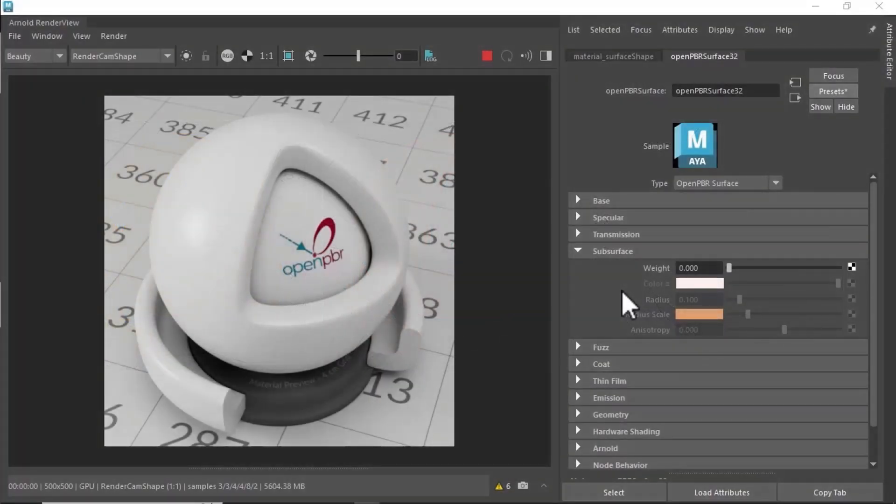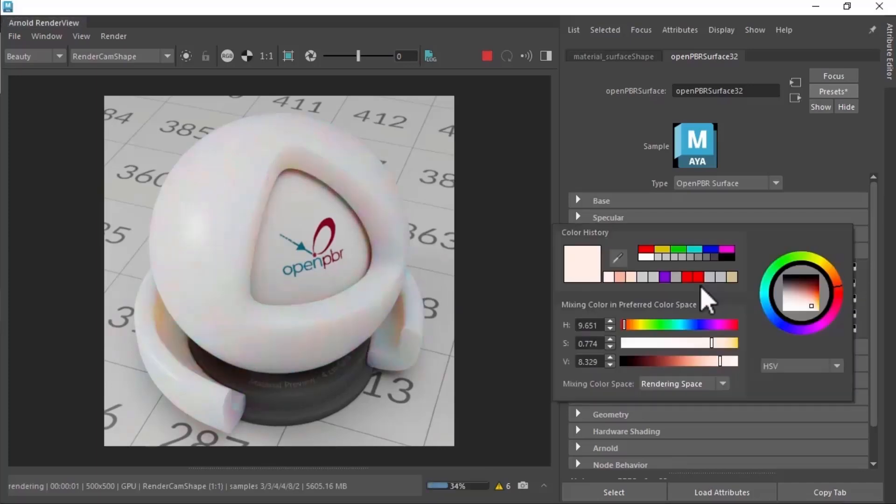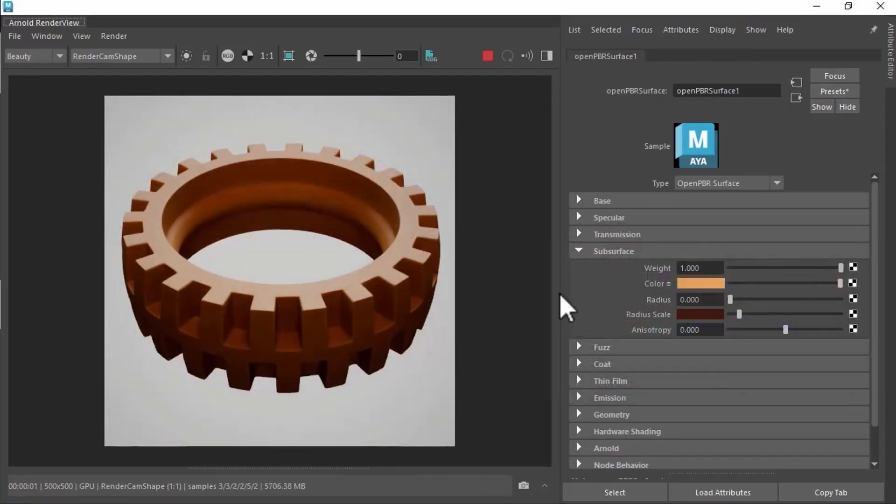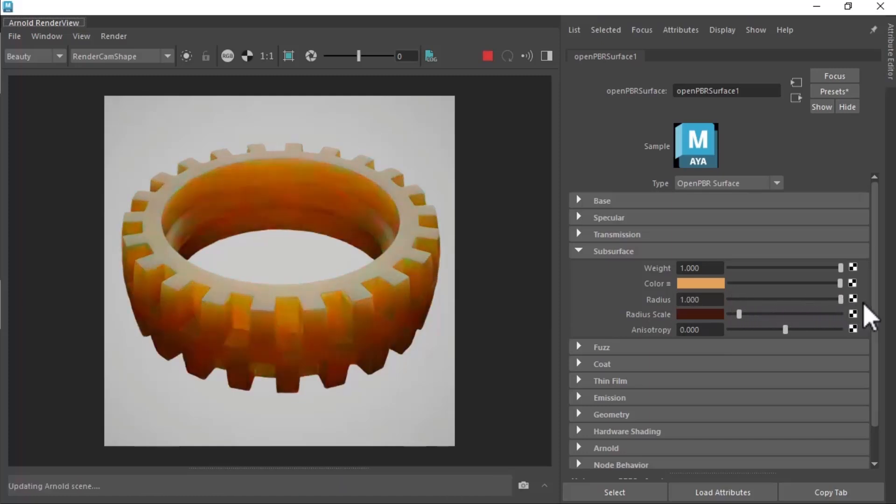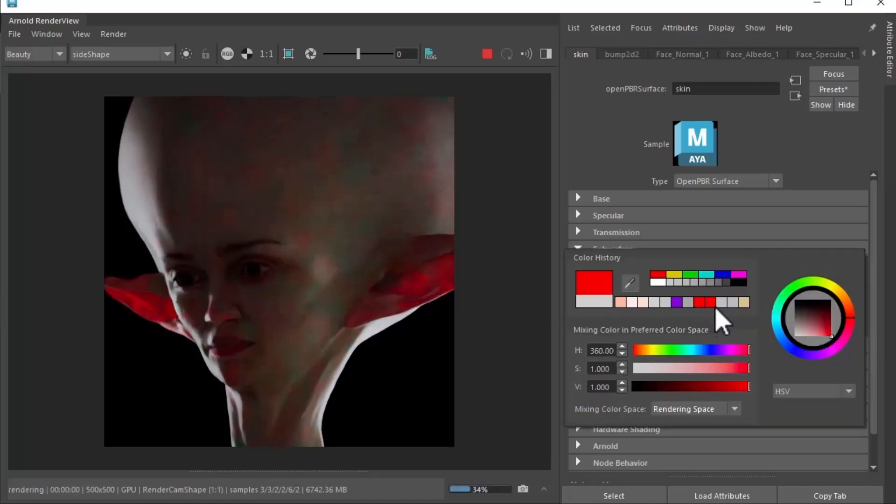The main controls in this case are the subsurface color, which controls the observed hue of the material after scattering, and the subsurface radius, which controls roughly the distance that light bleeds. The higher this radius, the more translucent the material. The subsurface radius scale gives further control over the distance that each individual color channel travels. So for example, in skin, red light travels further, which is modeled by setting subsurface radius scale to a pinkish tone.